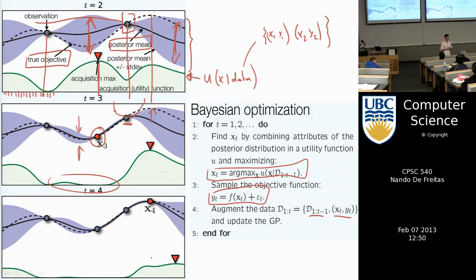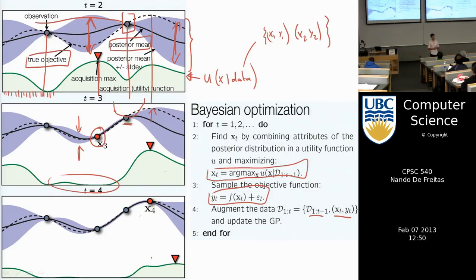A student notes that the GP will always have more variance at the extremes, so the acquisition function might be biased toward those boundary points. That's correct — where you are far from observed data, you will always have high variance. But it's not just variance that matters; the value of the mean also matters. If a point in the middle is much higher than boundary points, you probably won't visit the boundary.